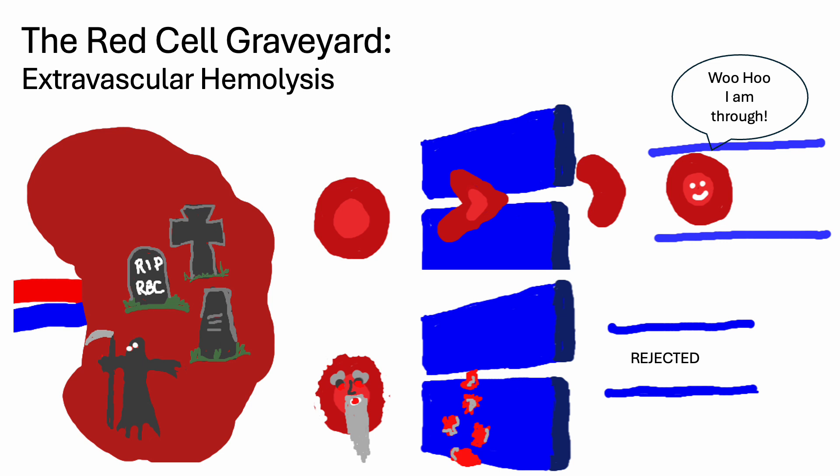Red blood cells typically live about 120 days. Every second your body makes about 2 million red blood cells. It takes a red blood cell less than a minute to move from your heart through your body and back to the heart again.